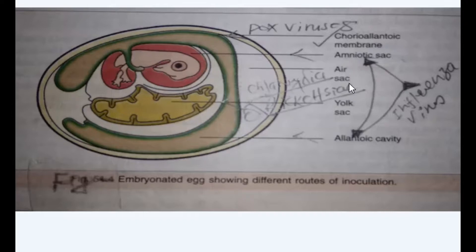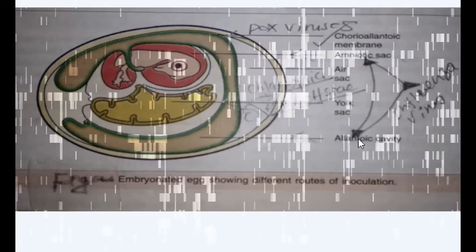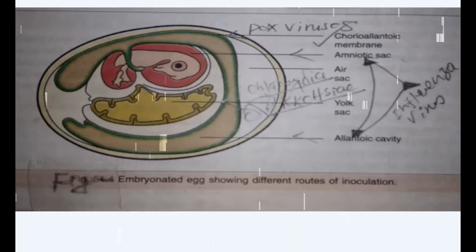Okay, so today we are going to inoculate influenza virus. So watch this clip. Here you can see this is the hen egg which is embryonated, 10 days old, and we are injecting influenza virus.